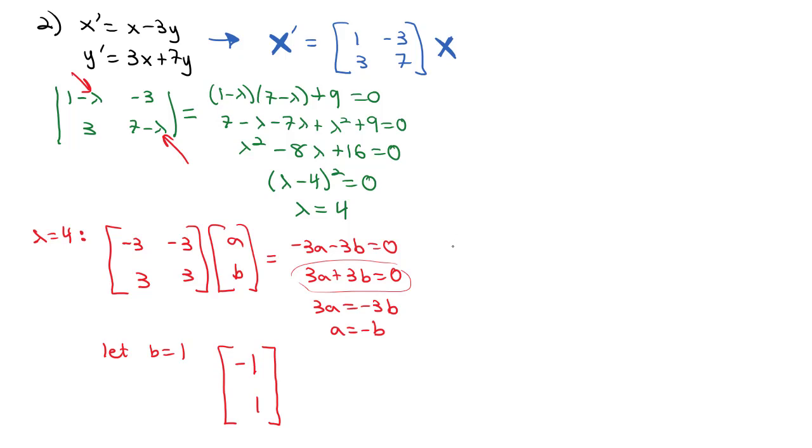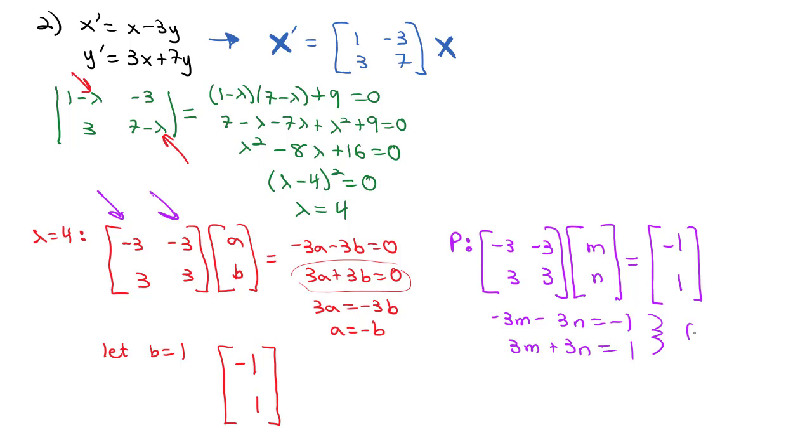Now we go back and find our p by taking that same matrix of negative 3, negative 3, 3, 3, multiplying by our p matrix mn, and we want that to equal the eigenvector we just found, negative 1, 1. That gives me negative 3m minus 3n equals negative 1, or 3m plus 3n equals 1.